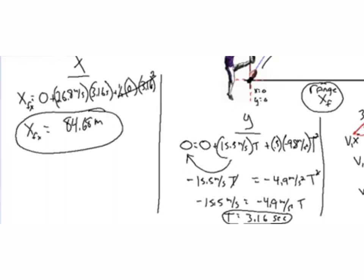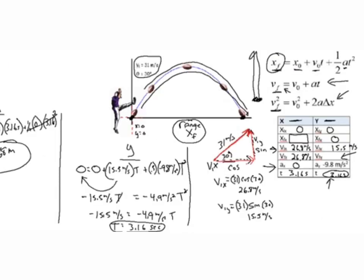And that is our range — a pretty hefty football or soccer kick, almost 85 meters. So that's how we solve another projectile motion problem. The keys are: first, break up any data that is not strictly x or y into its x and y components — we broke up the initial velocity into its x and y components. Then calculate y data first, bring it over, calculate x data, and complete the table.